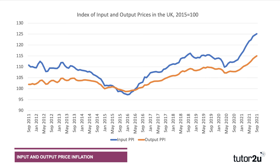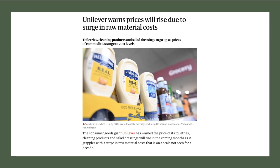This diagram shows the index of input prices and output prices for the UK since 2011. For a long time, input and output prices were fairly flat, even falling a little in 2015 when the economy was close to deflation, then a gentle rise. In 2021 there has been a clear surge in both input and output inflation, although inputs have been rising faster than output prices. Unilever is warning that prices will have to rise by around 4% this year due to increased costs.